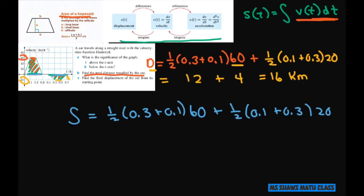And in this case, we're not going to add, we're going to subtract, because the car is moving backwards and then forward. So to find the final displacement of the car from its starting point, that's just 12 minus 4, which equals 8 kilometers.